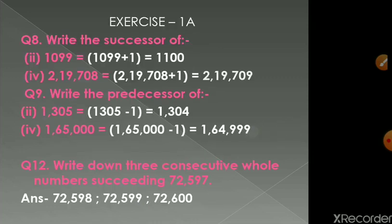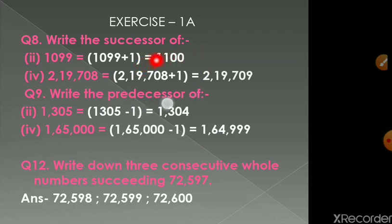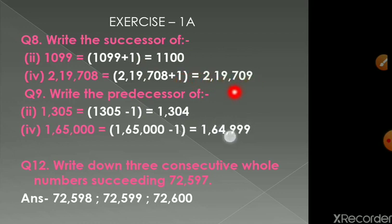In the last video we completed till question number 7. In this video we start from question number 8: write the successor of 1099. Since successor means adding 1, adding 1 to 1099 gives us 1100. Next, 2 lakh 19708: adding 1 gives 2 lakh 19709.